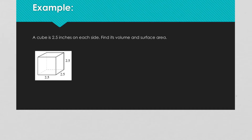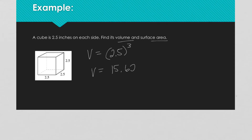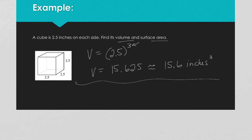On this problem we have a cube and we want to find the volume and the surface area. The volume is 2.5 raised to the third power, and we get that the volume is equal to 15.625. If you want to round that, you could round it to about 15.6. But with volume, since we have a cube, we have to have a cubed unit in our label.